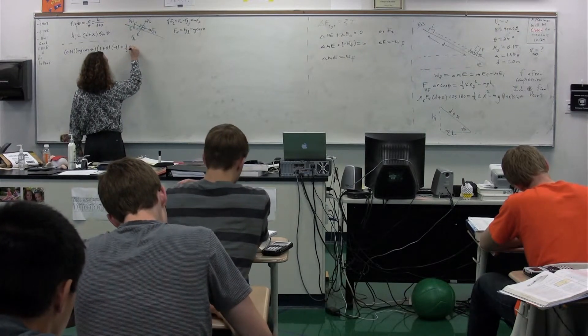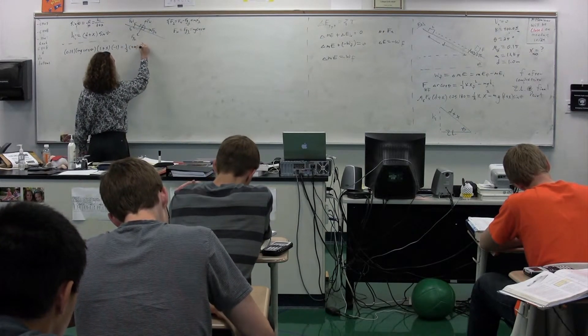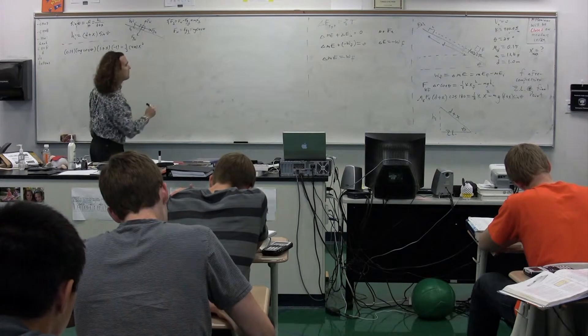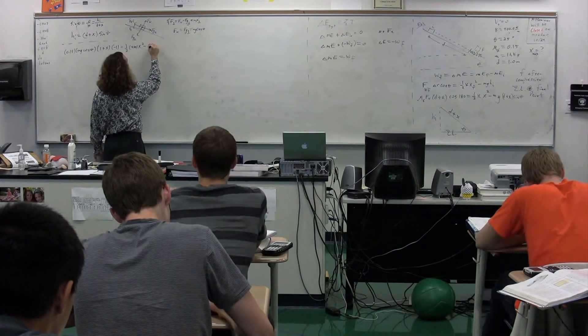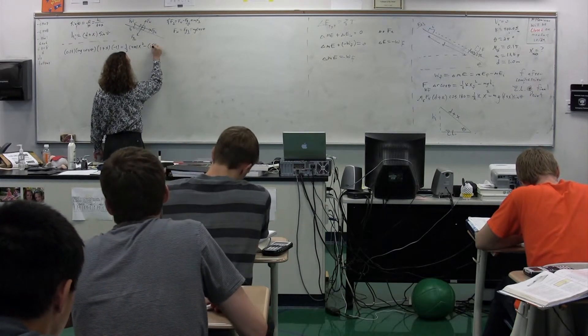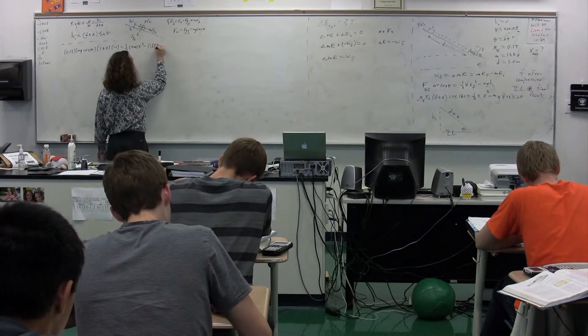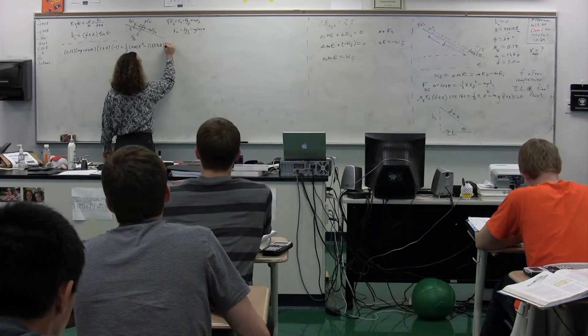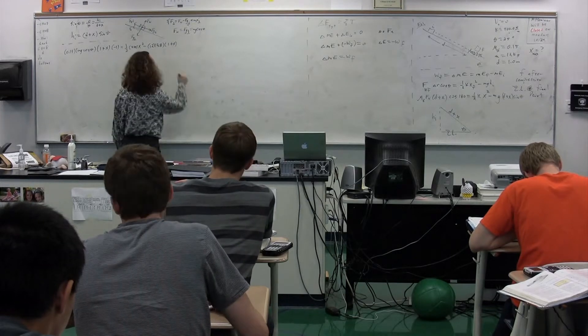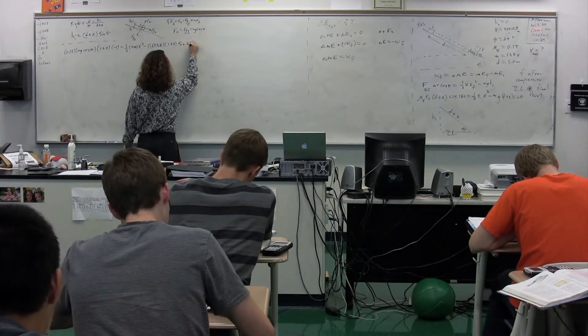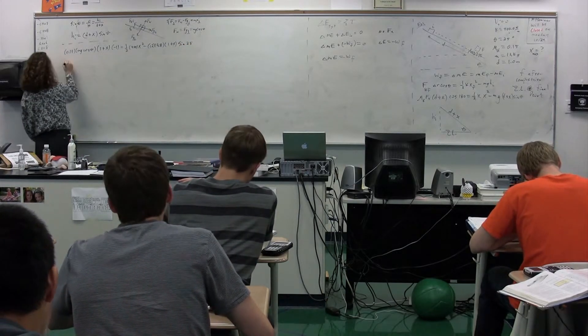Equals one half, what's K? 400. Times x, which we're looking for, squared minus mass? 12. 12 times? 9.8. 9.8. Times? 1 plus x. Times? Sine. Sine of 25. We're almost there. We're almost there. We have almost all of the numbers.